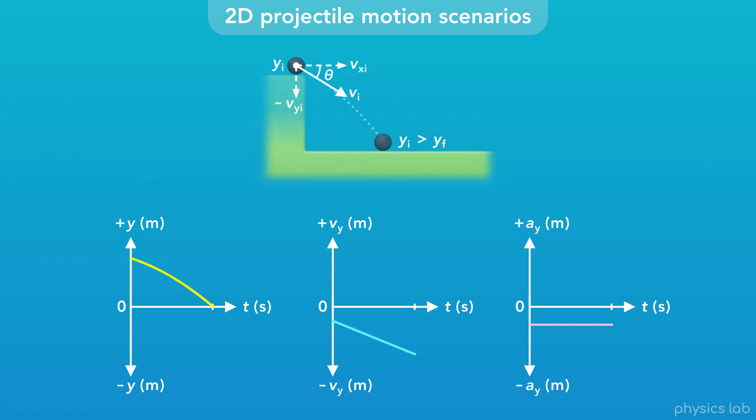And finally, if the launch angle is below the horizontal, the y velocity starts out negative and increases in the negative direction. The y position starts with a negative slope and goes to 0.